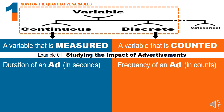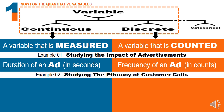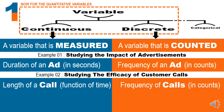Suddenly it becomes very obvious. The duration is measured in seconds — it's a continuous variable. Whereas the frequency of the ad — how many times a Coke ad was shown versus a Sprite ad versus a Bovonto ad — is a count, and that becomes a discrete variable. A second example: studying the efficacy of customer calls. The length of the call is a function of time, measured using a stopwatch — continuous. The number of calls needed to move a prospect from cold to warm and then from warm to hot is simply a count — a discrete variable.